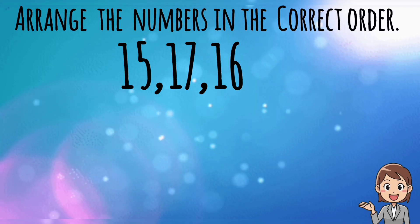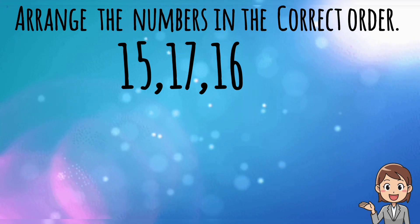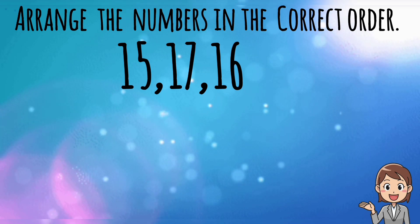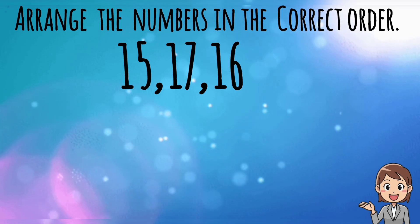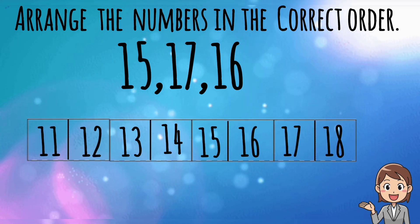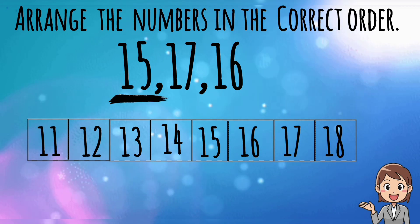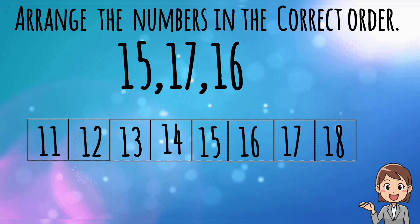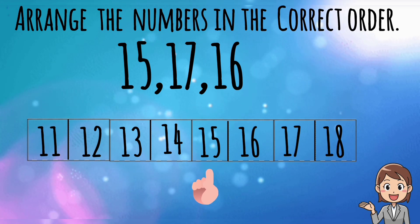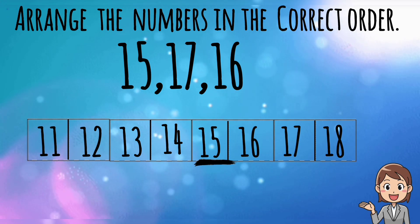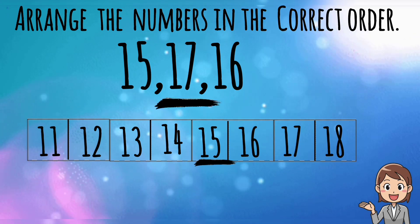The last question is: arrange the numbers in the correct order. Students, we have to arrange three numbers in the correct order. Using a number line, we can solve this problem. The first given number is 15. Where is 15 on the number line? Yes, you are intelligent — 15 is here. So underline this 15. The second given number is 17.